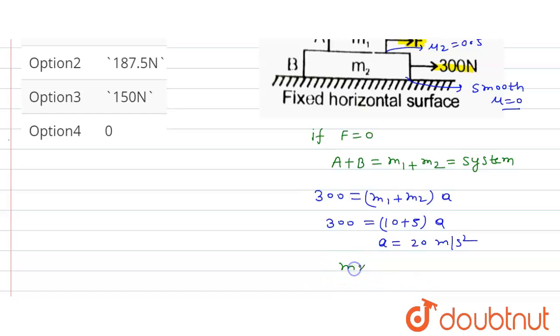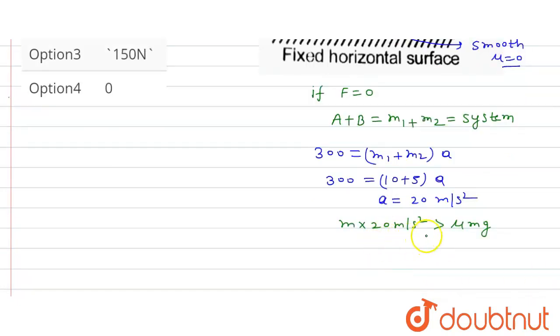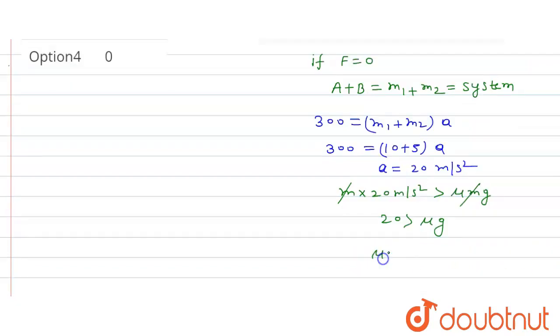This m into a that is 20 meter per second square if greater than mu into mg, relative motion will occur. If we apply F equals 0, so m cancels. So 20 greater than mu into g. Now we calculate mu g, so mu into g equals mu value 0.5 given into g value 10 that equals 5.